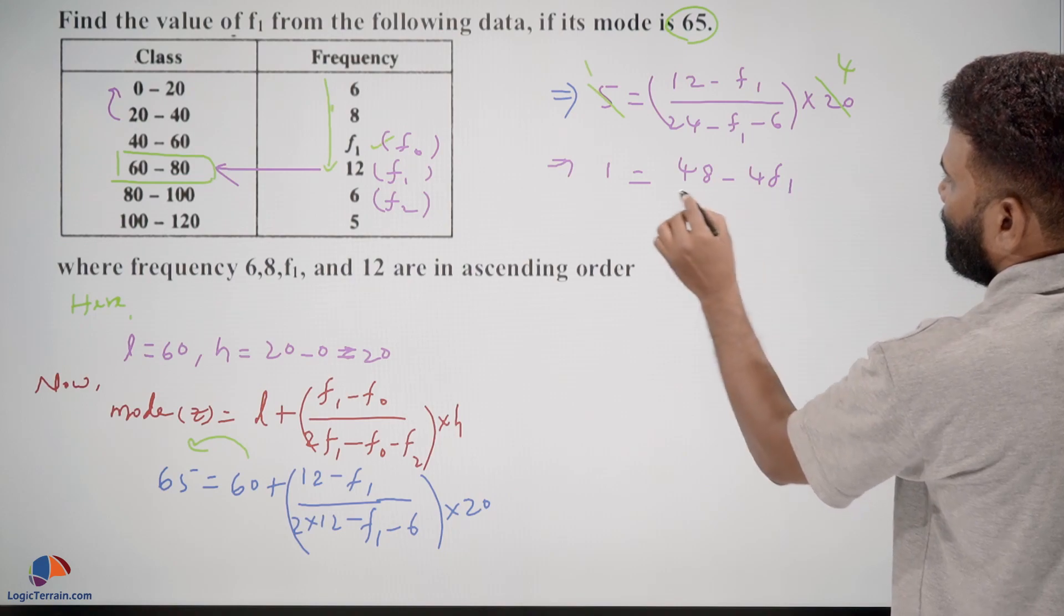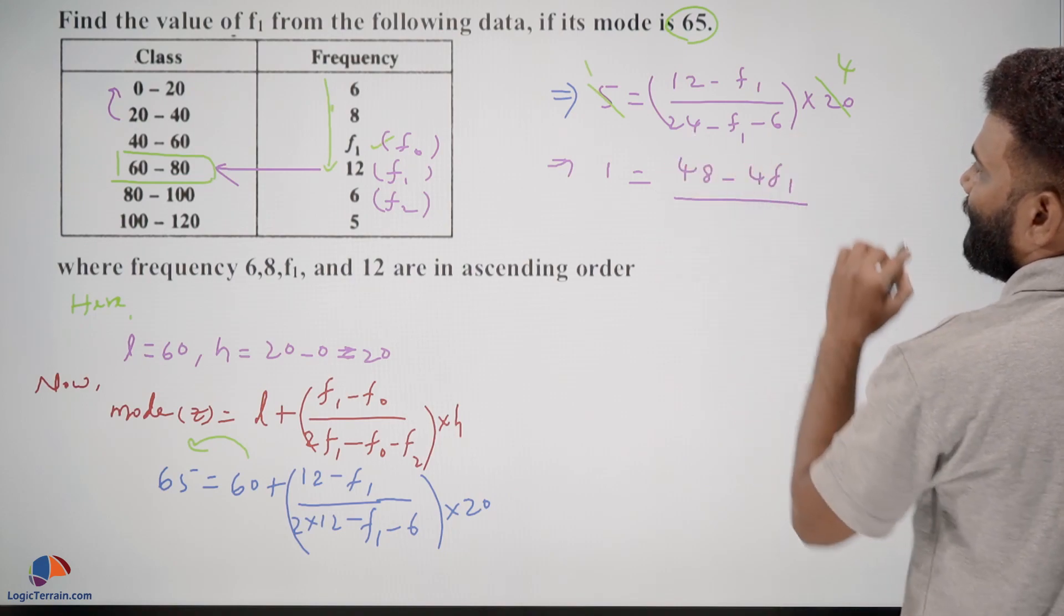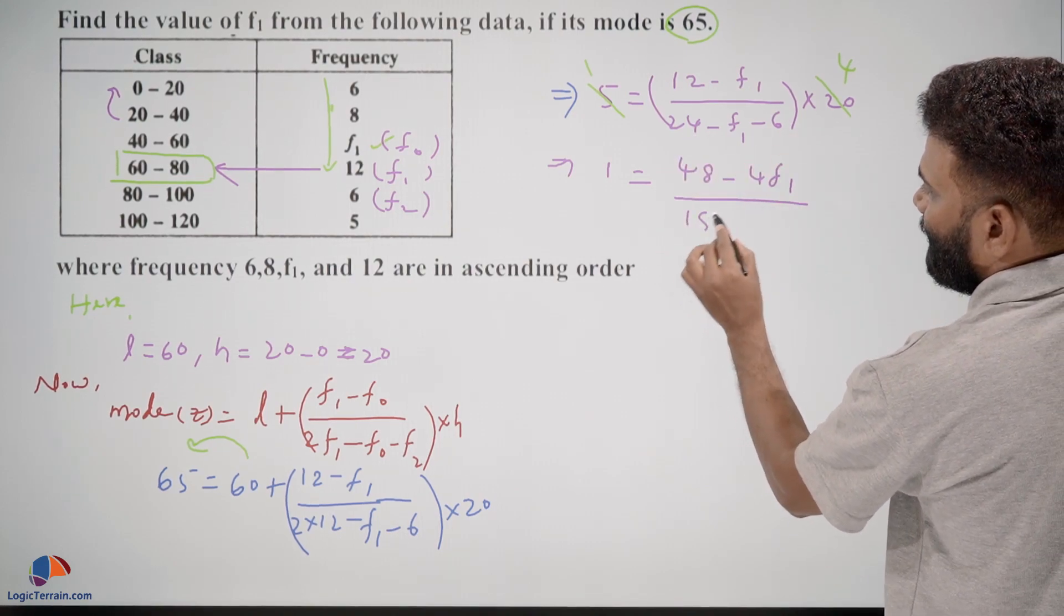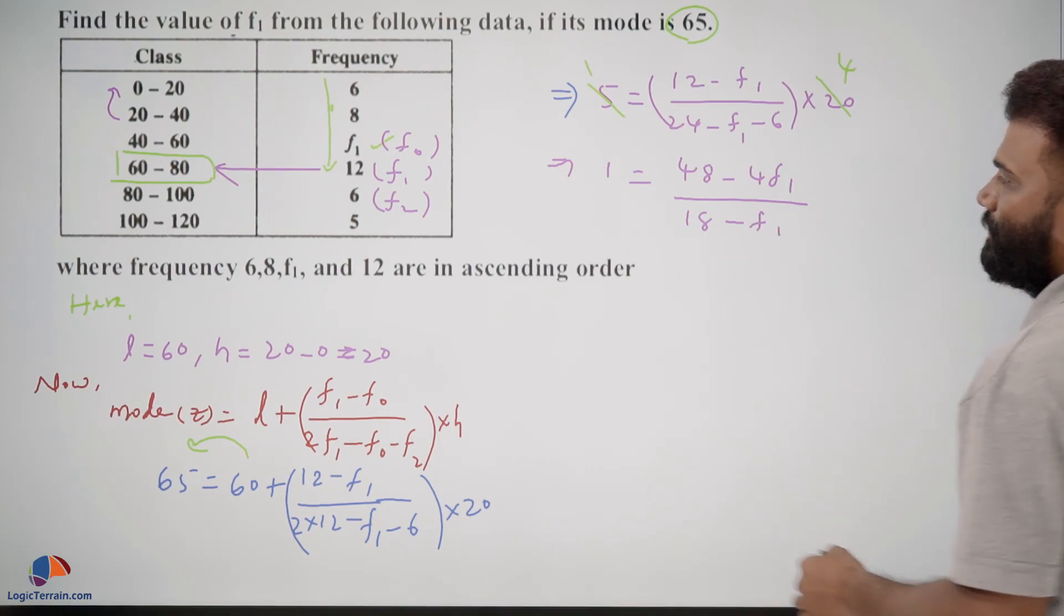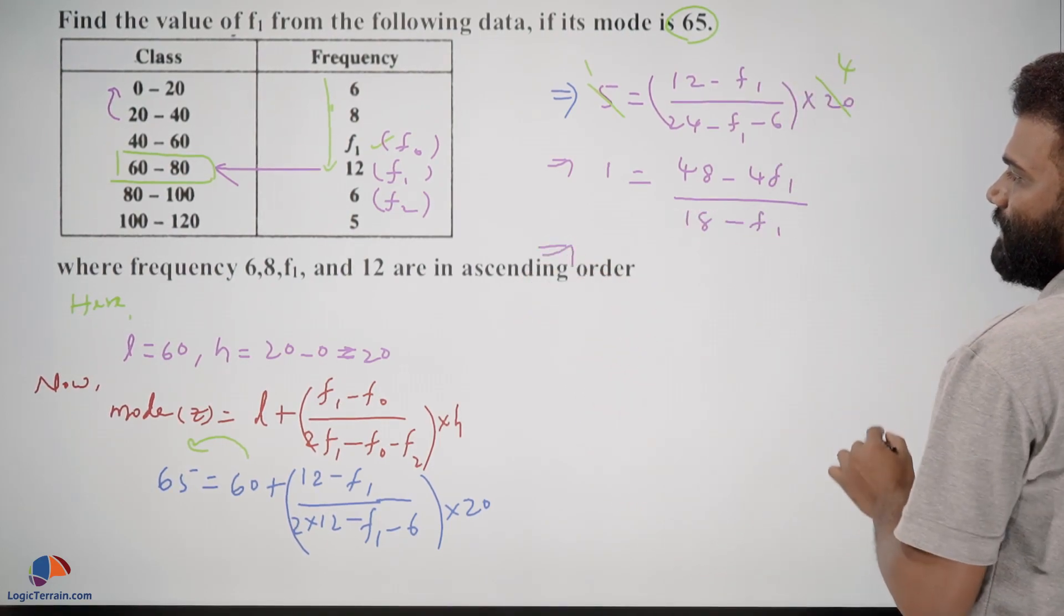48 minus 4f1 upon 18 minus f1. So on further, take all f1 to one side and constants to another side.